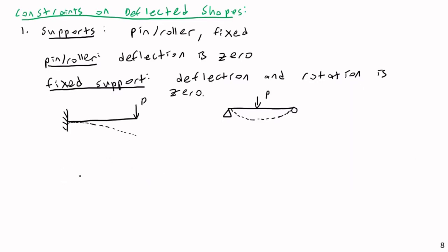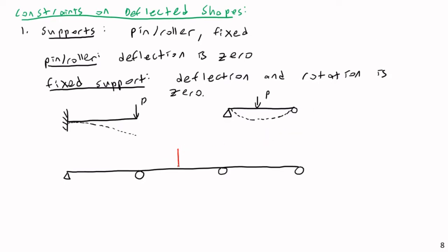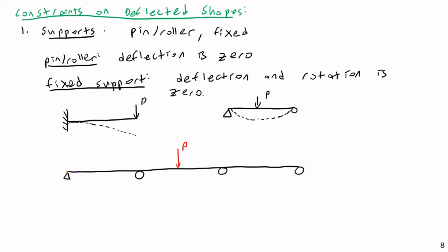Where this gets really interesting is where we have statically indeterminate beams. What if I have a beam with multiple spans? If I have a statically indeterminate multi-span beam and apply a point load P in the middle, I must have zero deflection at each support. At the pin and roller supports, because there's no constraint on rotation, I cannot have sudden changes in curvature there — I can't have a deflected shape that abruptly reverses direction at a support.